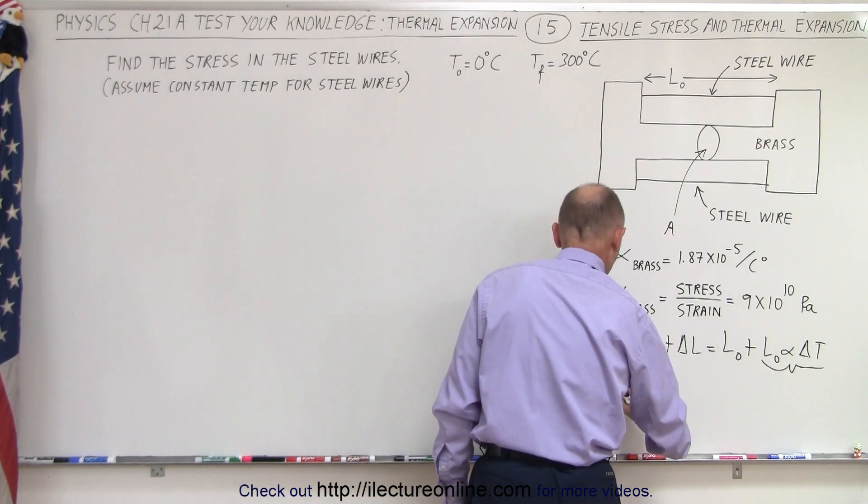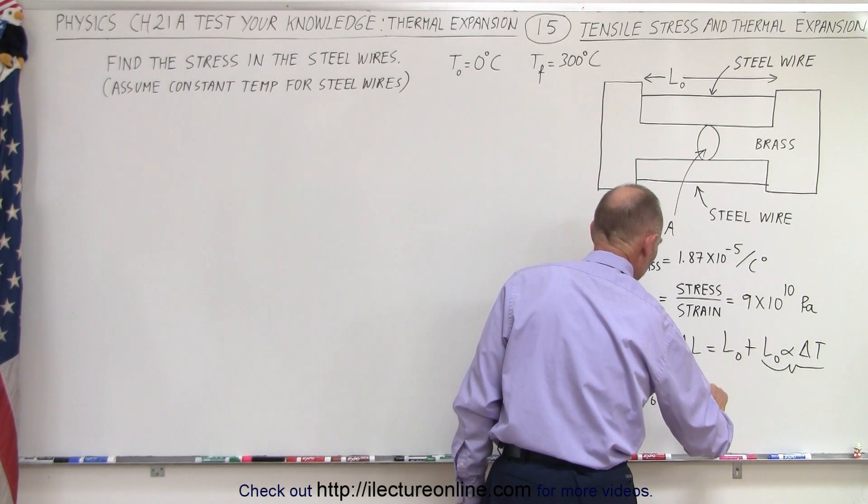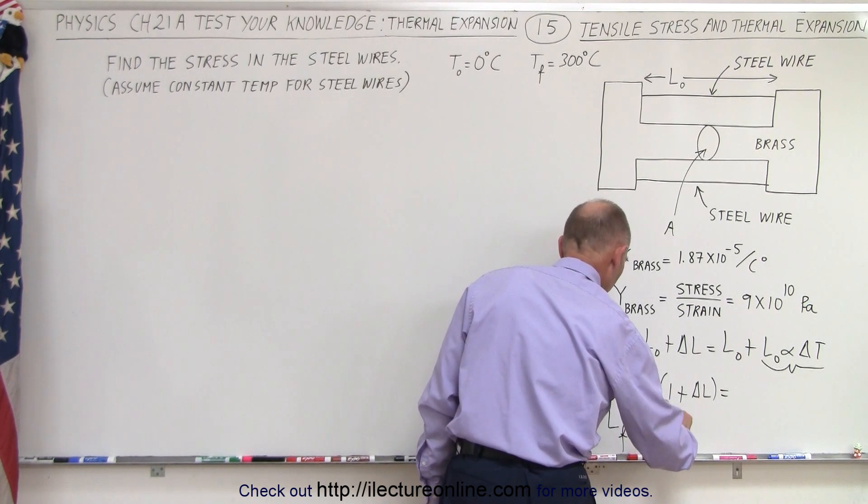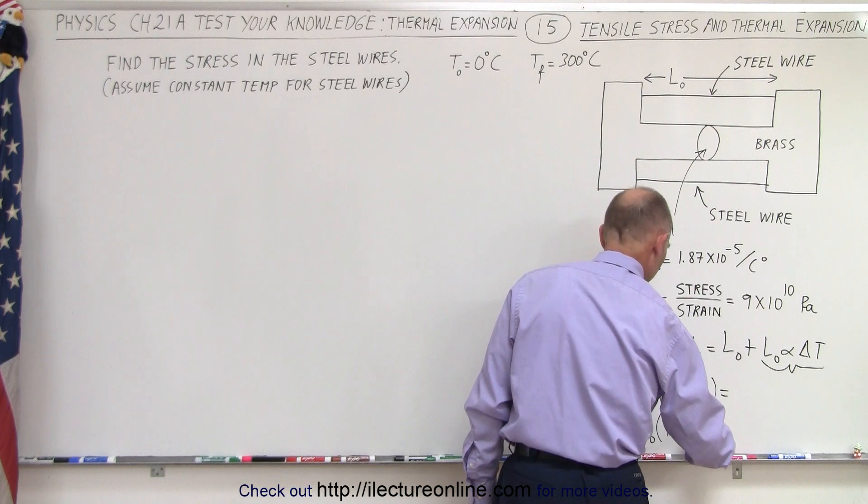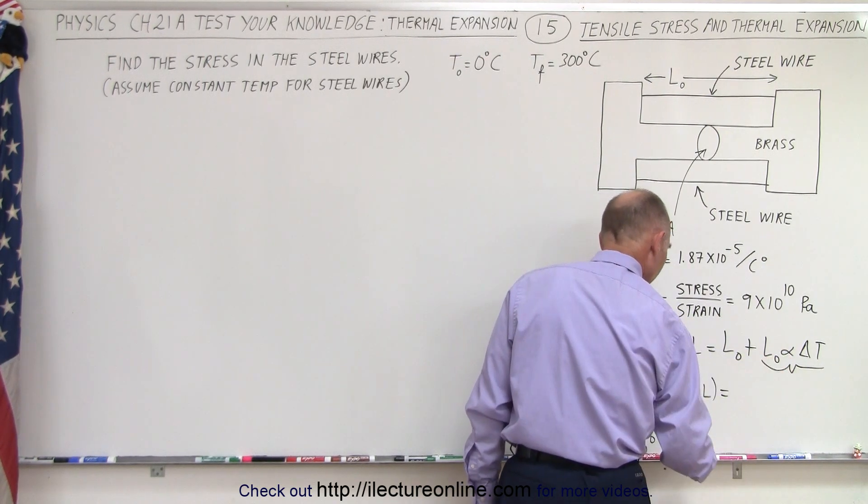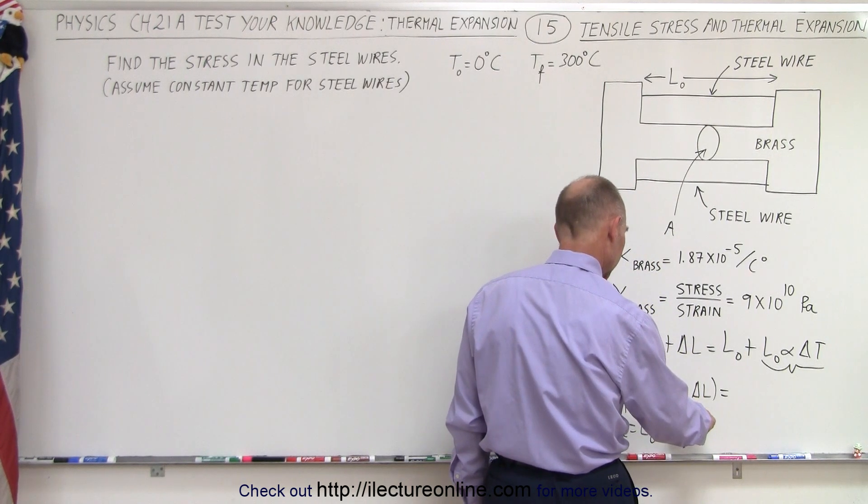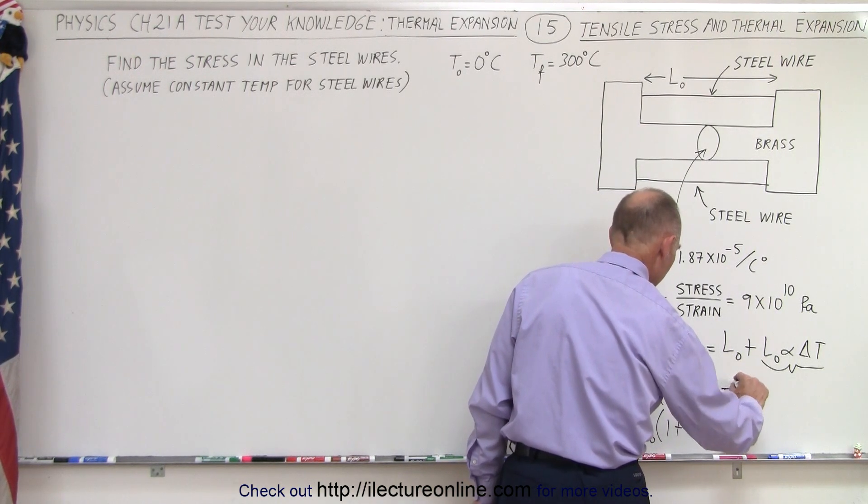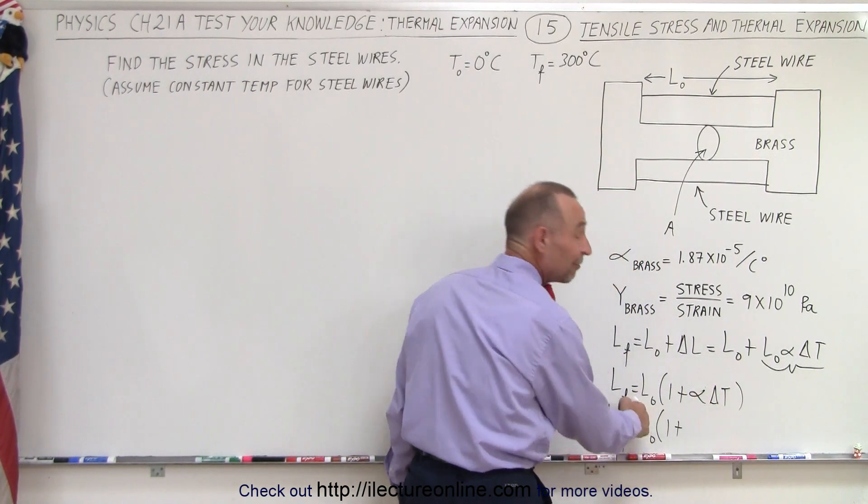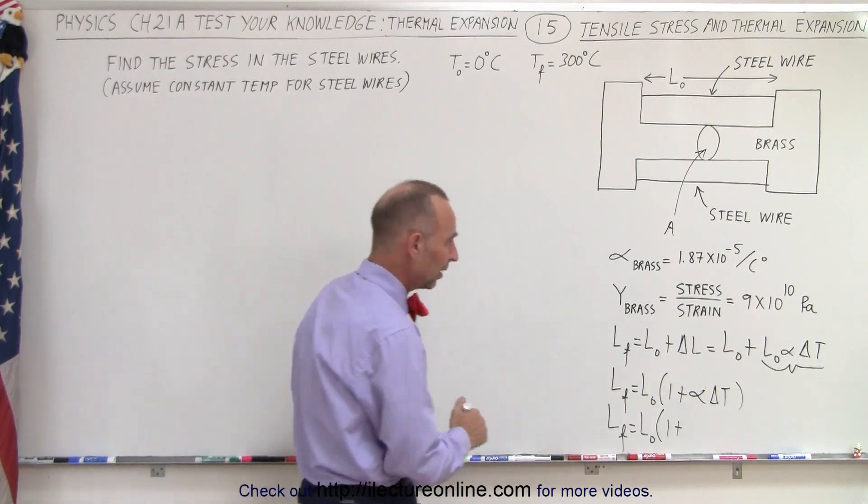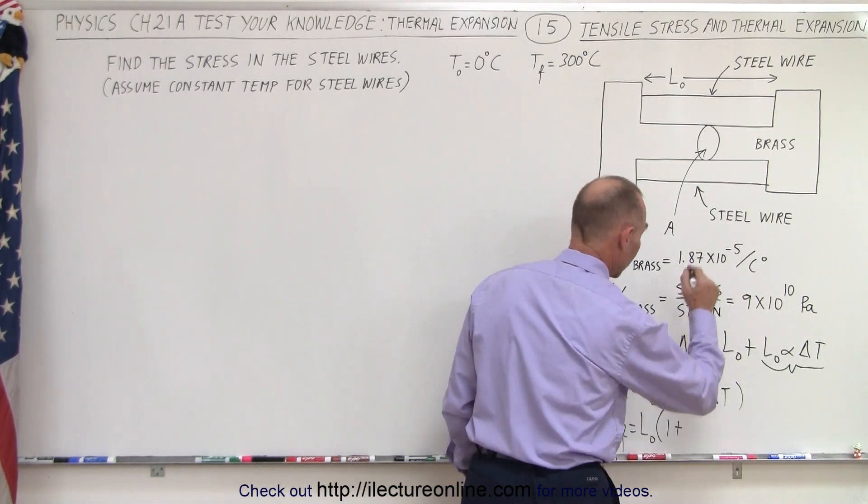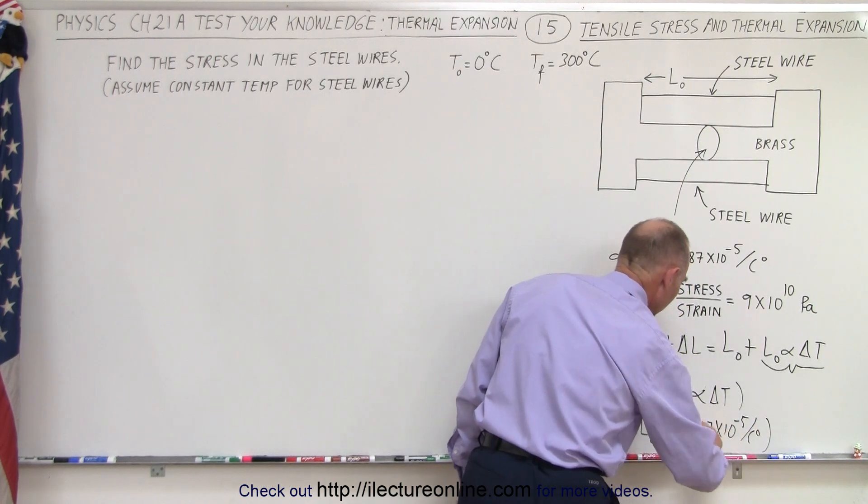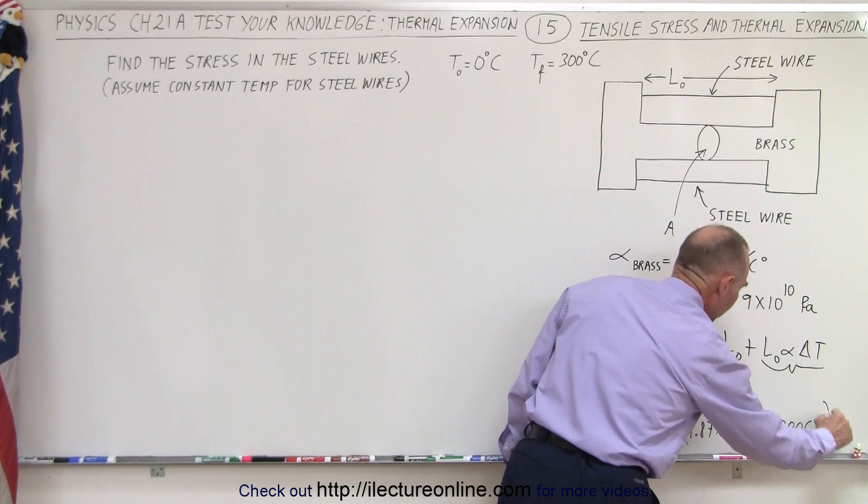So we have the final length will be equal to the original length times one plus the change in the length. And so in this case that would be equal to length final equals length initial times one plus, the initial length, well we factor that out, times alpha and delta T because that's the more correct form of the equation since I already factored out an L sub not. So I got to be careful while I write down there since I factor out an L sub not, I have the two remaining terms right here, so let's write those down: 1.87 times 10 to the minus 5 per centigrade degree, and then we multiply that times 300 centigrade degrees like that.